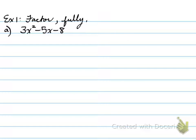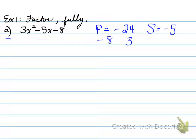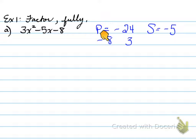We need to factor this fully. We ask ourselves: is there a common factor? The answer is no. So the next step is to find the product. The product here is negative 24 (3 times negative 8). The sum is negative 5. What two numbers multiply to give you negative 24 and add to give you negative 5? That's going to be negative 8 and positive 3.